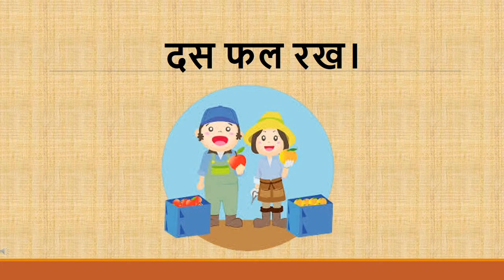Now let's see this sentence: thas, fal, rak — thas fal rak. In English, we say: keep ten fruits.